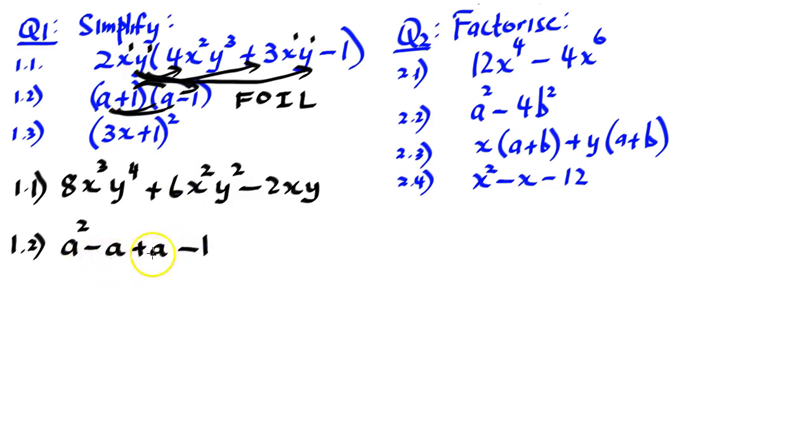Now we've got like terms. These two terms here, minus a and plus a, are like terms. Minus a added to plus a is 0. Therefore, the answer is a squared minus 1. We also call this sum and difference. When we multiply sum and difference, we get a squared minus 1, which is difference of two squares.